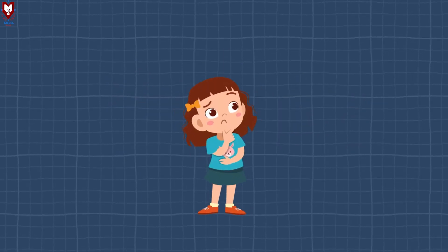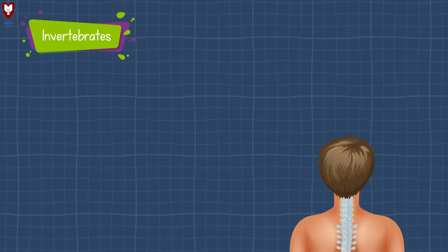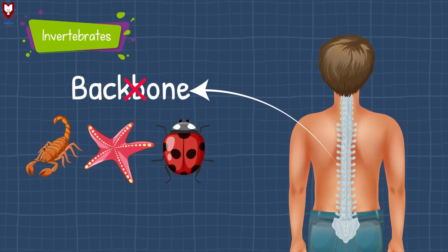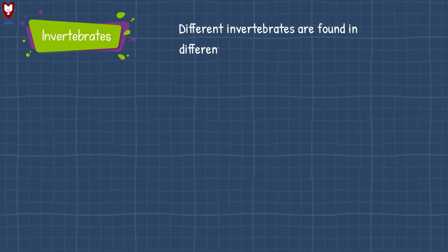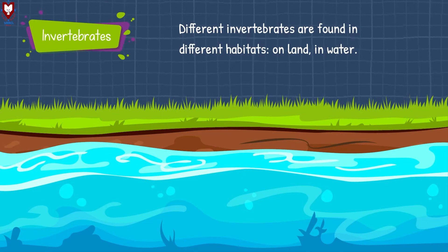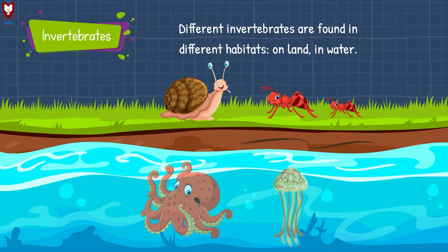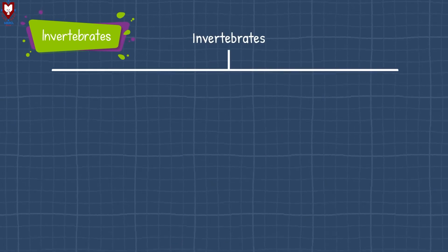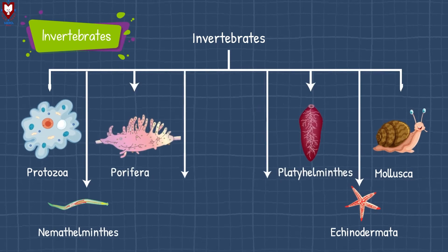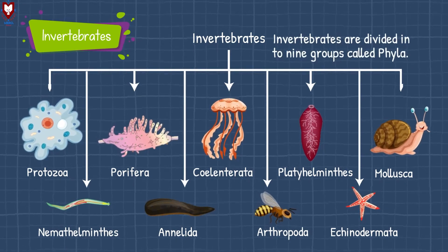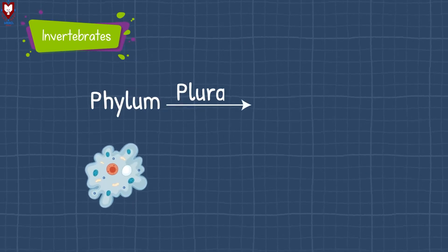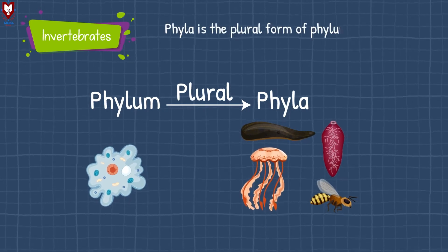What do you think about invertebrates? They have different shapes and sizes and are found in different habitats — on land, in water, and some can be found in both. The invertebrate animals can be divided into different groups, each group called a phylum. Invertebrates are divided into 9 groups called phyla. Phyla is the plural form of phylum. Now let's study each phylum one by one.